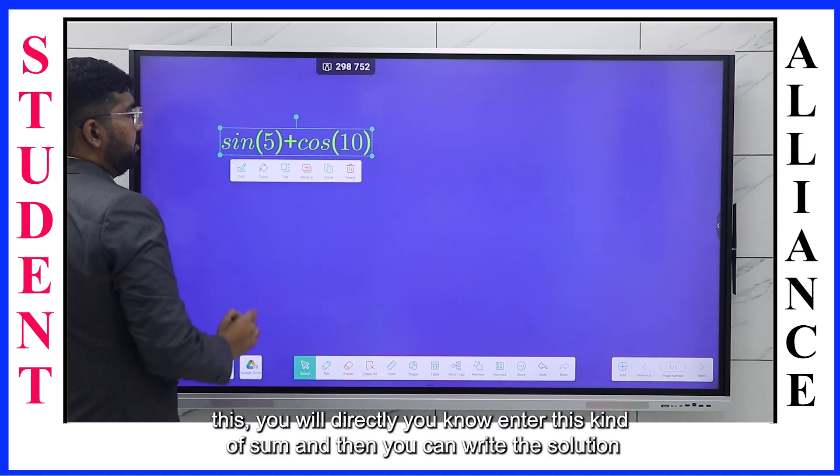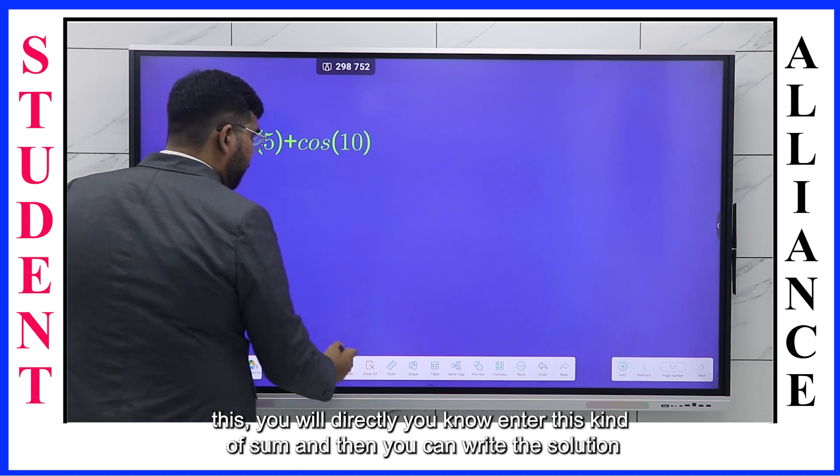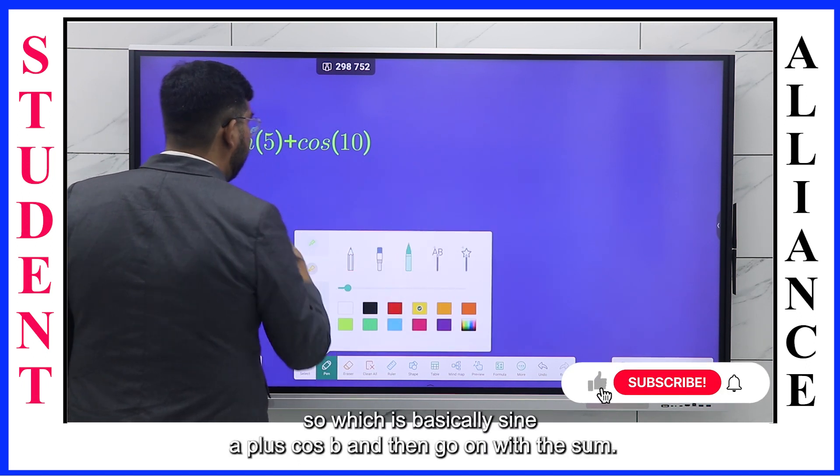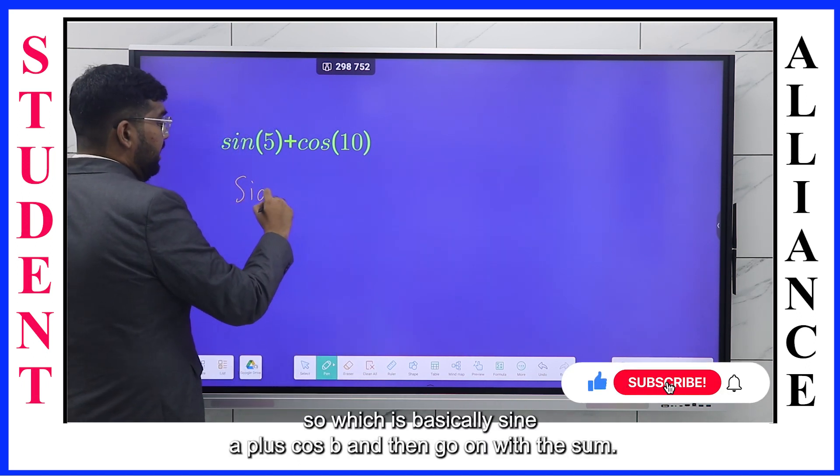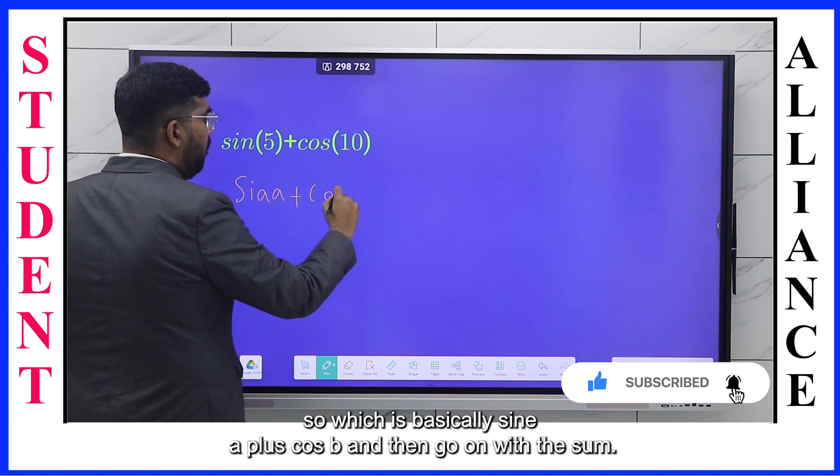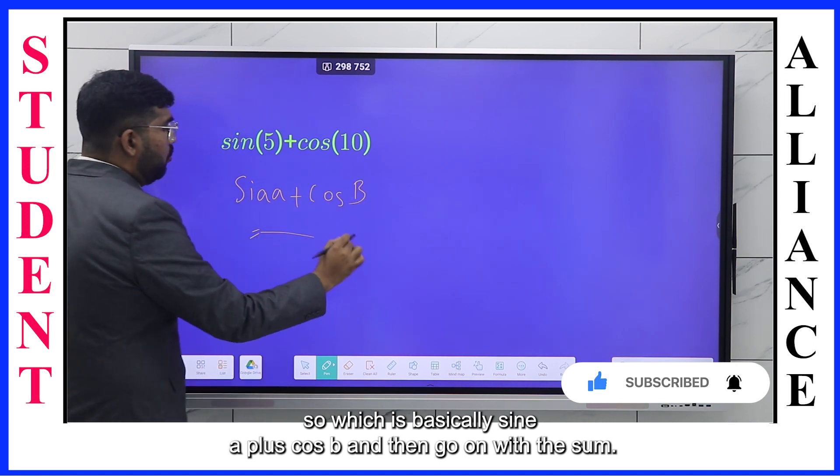You will directly enter this kind of sum, and then you can write the solution, right? So it is basically sine a plus cos b, and then go on with the sum.